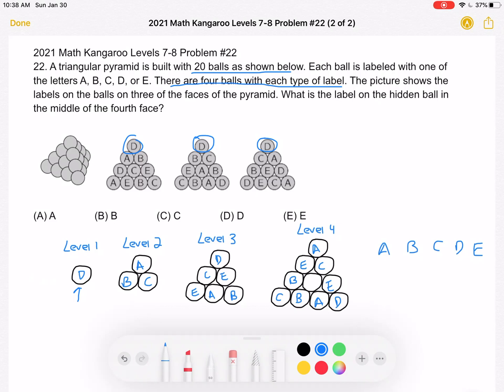Then for level two, if we look at the second row, we have A, B, C, C, A. So we know that the three balls here are A, B, and C.